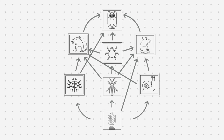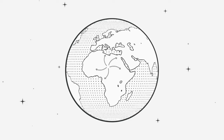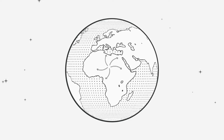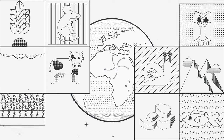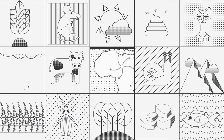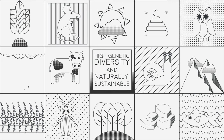All of these components interact through various nutrient and energy cycles to create large and incredibly complex webs. Sometimes these webs contain over a hundred different components and span thousands of kilometers. Overall, natural ecosystems consist of many species of plants and animals, have long and complex food webs, high genetic diversity, and are also naturally sustainable.